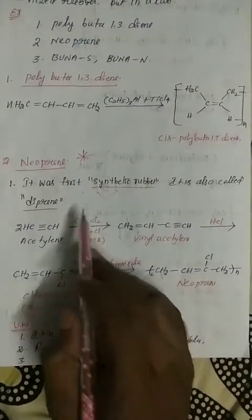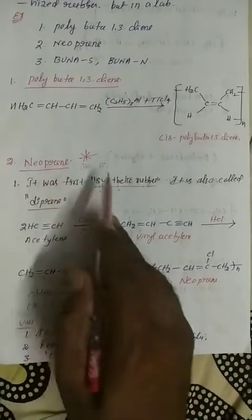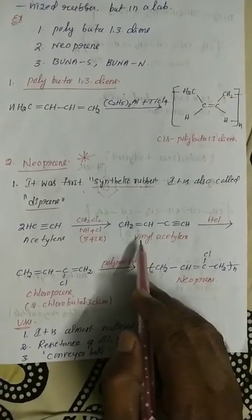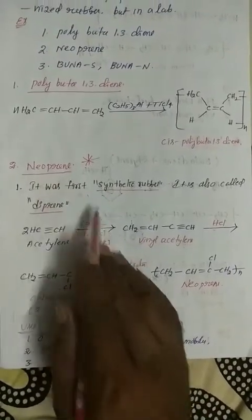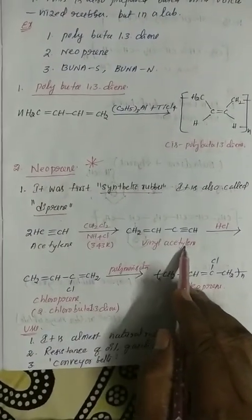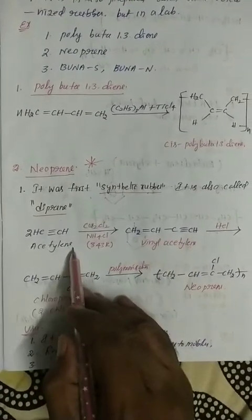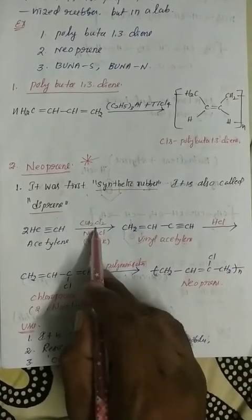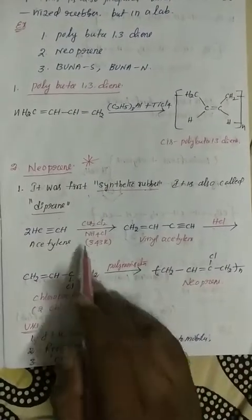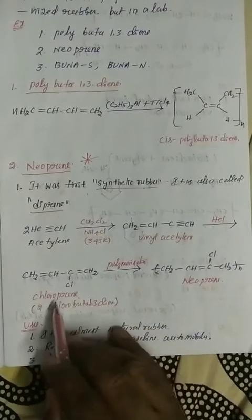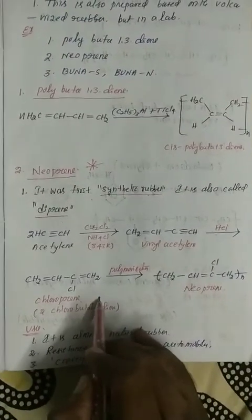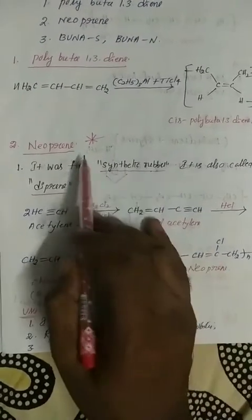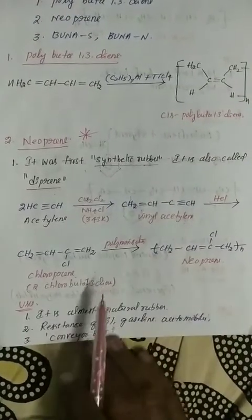Important points in the preparation of neoprene for NEET level: vinyl acetylene is formed when acetylene reacts with NH4Cl or Cu2Cl2; chloroprene is formed when vinyl acetylene reacts with HCl. Neoprene is the first synthetic rubber, also called Duprin. Its characteristics are almost like natural rubber, but with more stickiness and more elasticity.